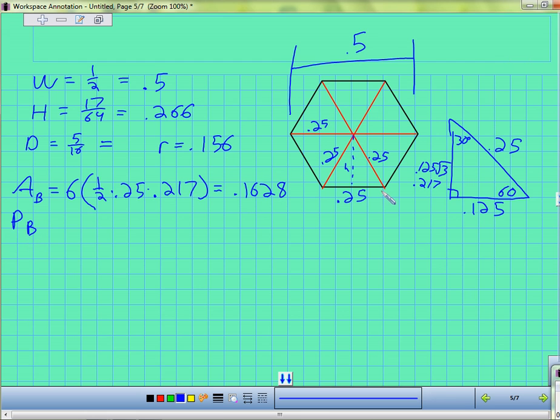Perimeter of the base: I've got six sides that are 0.25, so six times 0.25 is 1.5. Now let's figure out my circle. Area of the circle is pi times my radius 0.156 squared, which is 0.0764. And the perimeter of that circle is 2 times pi times 0.156, which is 0.980.